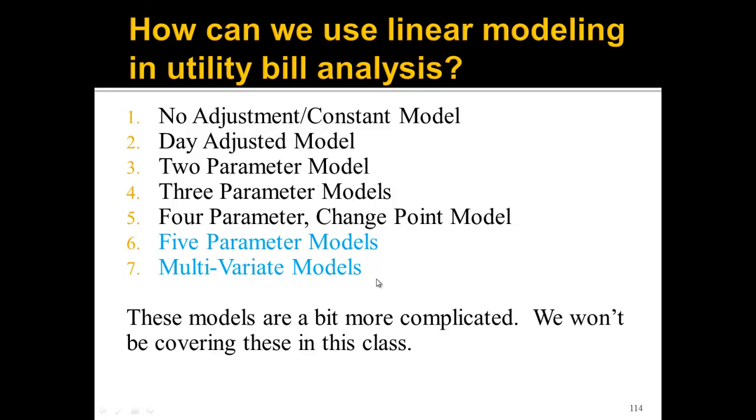I didn't want to get too much into five-parameter models and multivariate models in this class. These models are a bit more complicated and we don't really have time to cover them. One thing I will say about multivariate models is if you're looking at a school, a multivariate model can take into account whether the school is occupied or unoccupied during that time period. This is one reason why I don't have you do any of your electricity bills for adjusted baseline because the three-parameter model can't take into account whether the school is occupied or unoccupied. That really affects the air conditioning use over the summer, which would really affect your electricity bills.